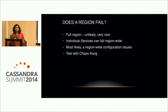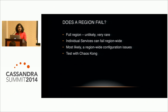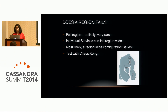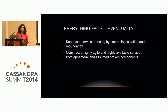Region failures are very rare but they do happen. Netflix has been hit — we push the limits of software and hardware and have seen one-in-a-million failures occur. Region failures are mostly related to region-wide configuration issues, and we test them using Chaos Kong. The key principle is that everything will eventually fail, so what defines a service is how you architect around failures and still remain highly available by embracing isolation and redundancy.